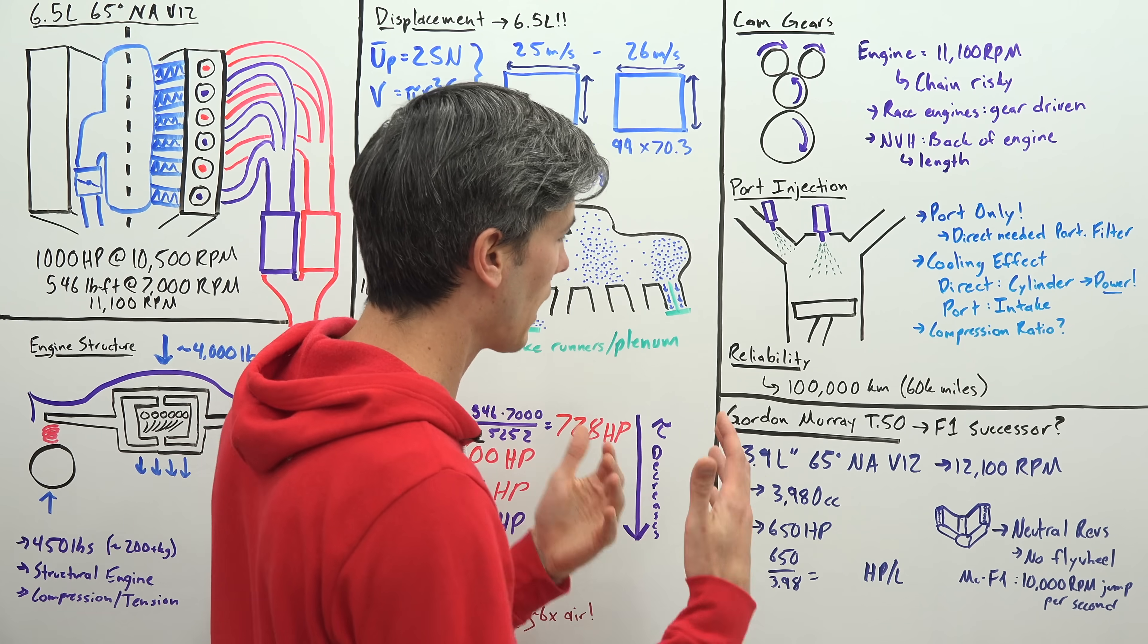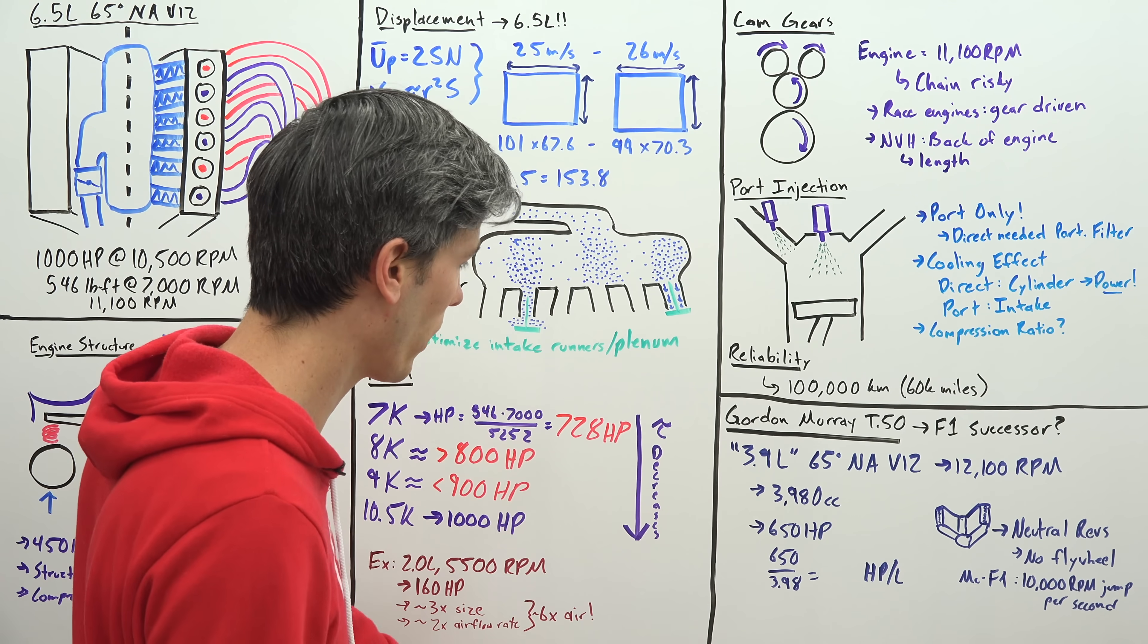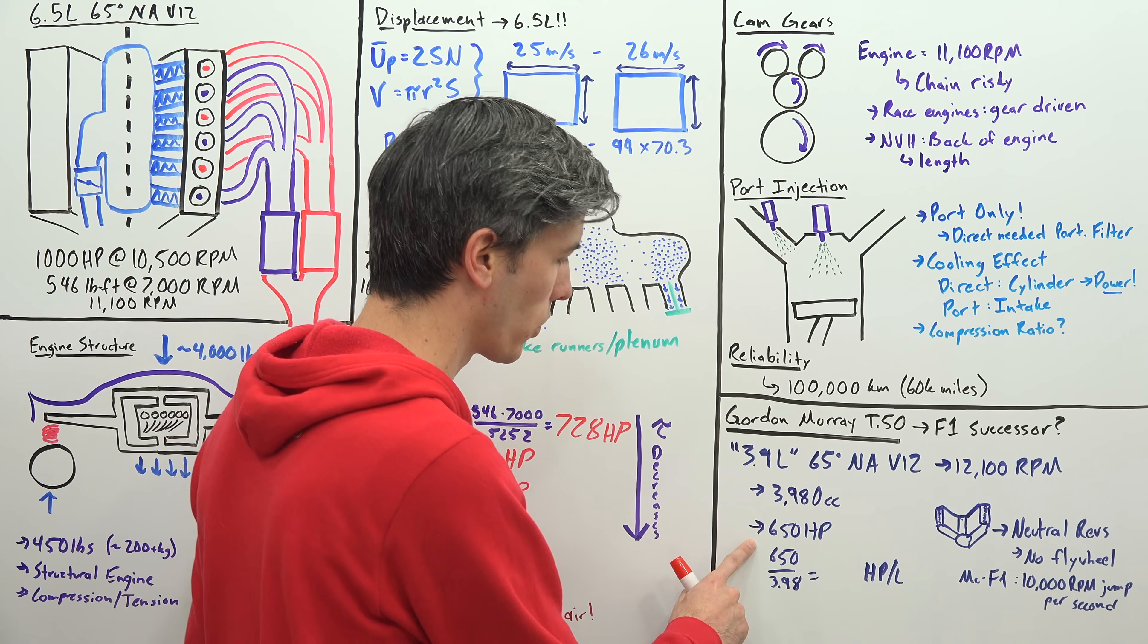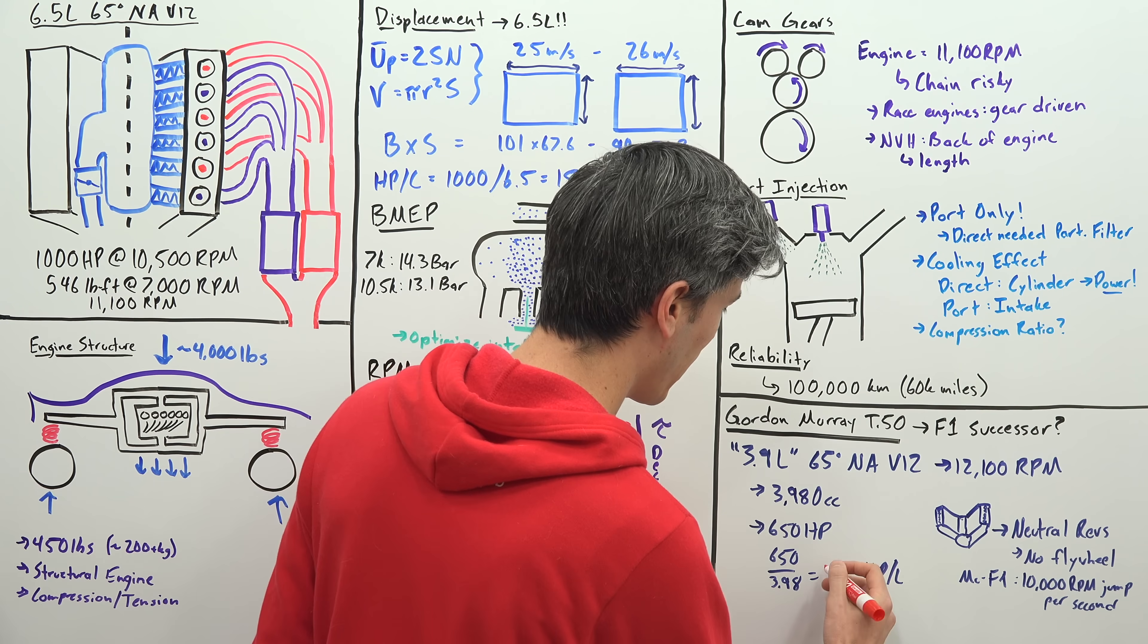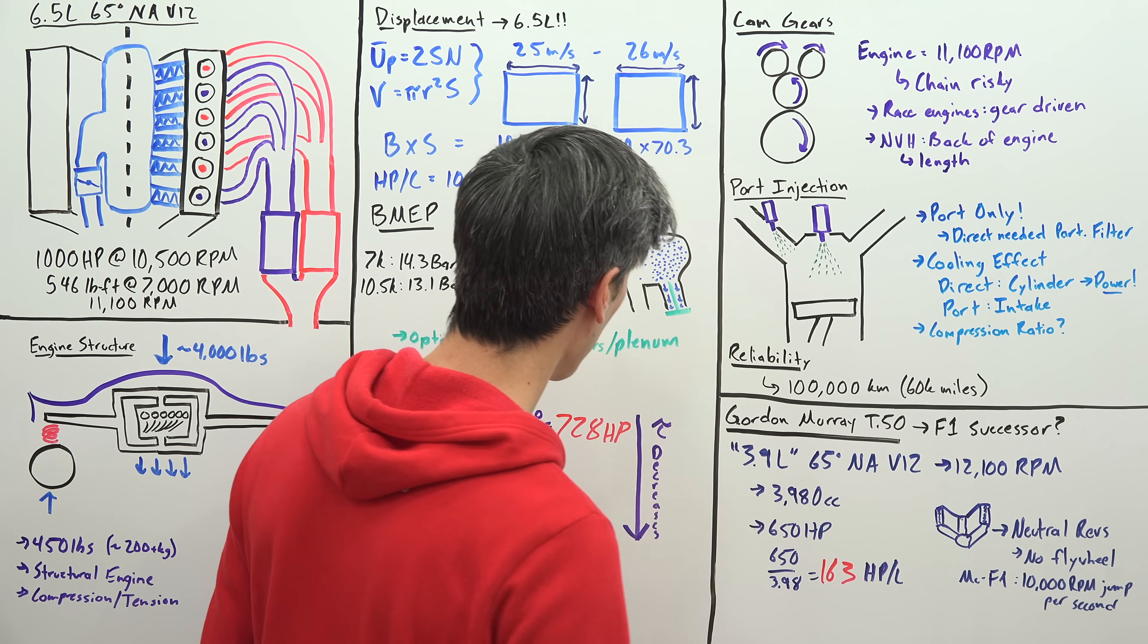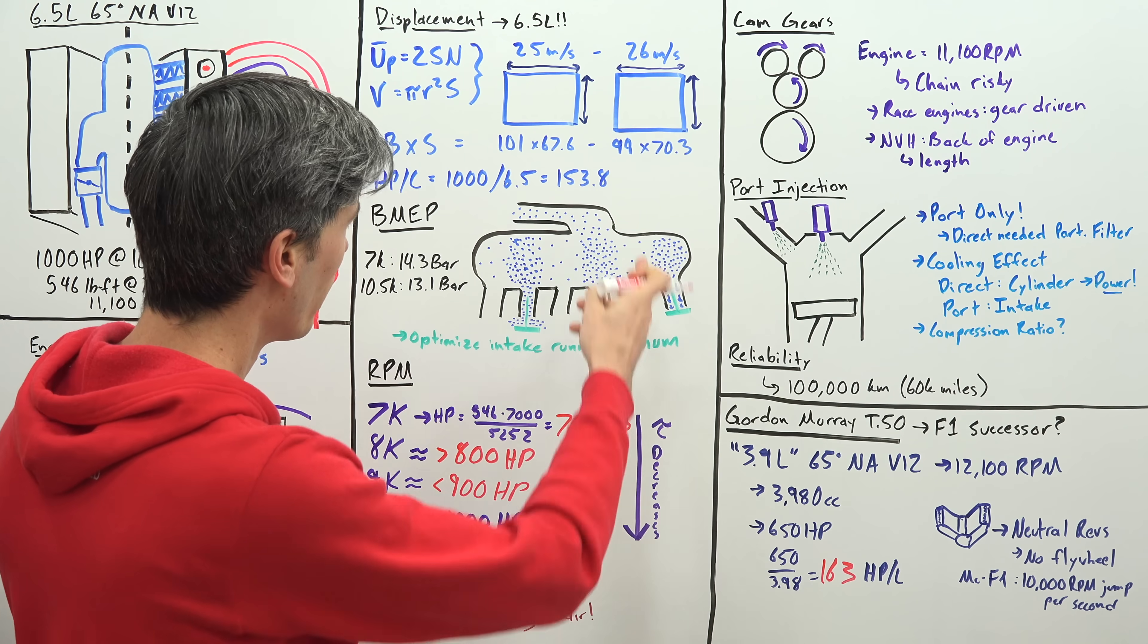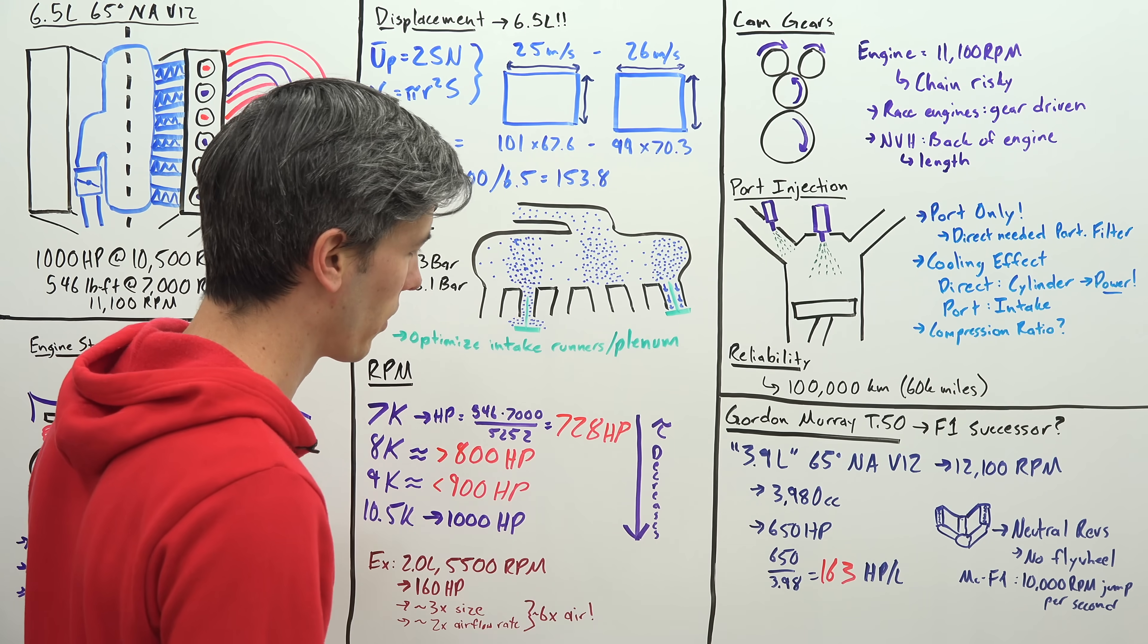Smaller of course than this one here but revving higher and because it revs higher that actually does give them a power per liter advantage. So 650 horsepower divided by 3.98 is about 163 horsepower per liter rather than that 153.8. So this shattered everything before it and then this comes along not too long after and blows it out of the water.